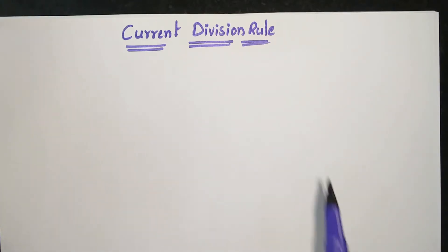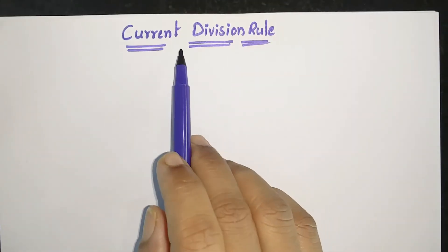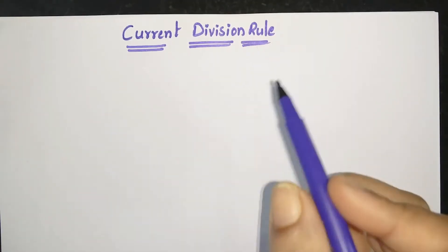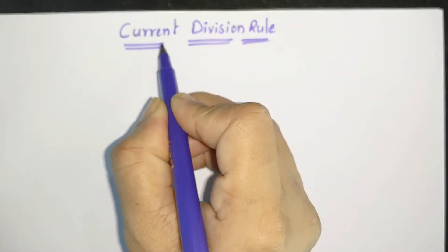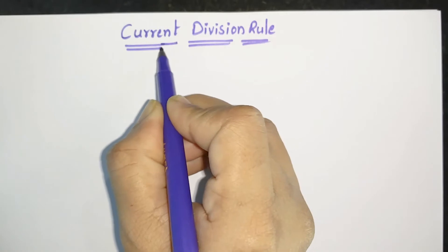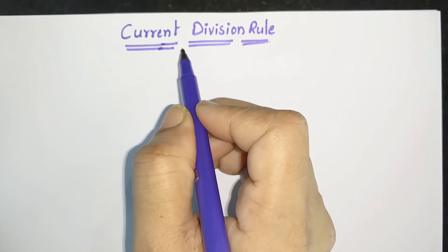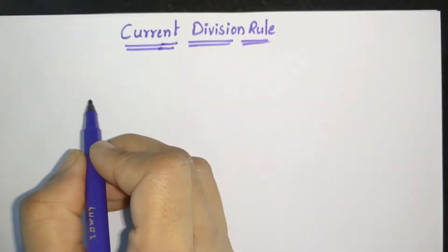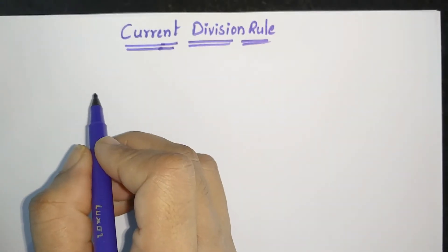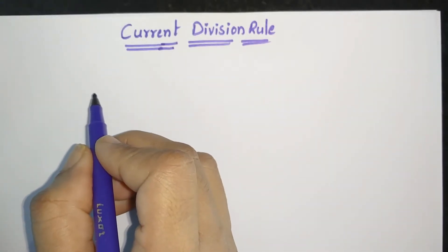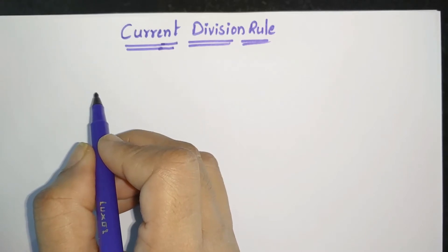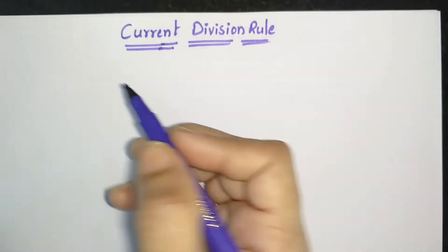We are going to study the current division rule, which is very important in electrical circuit analysis. Let us have the derivation with a simple circuit.